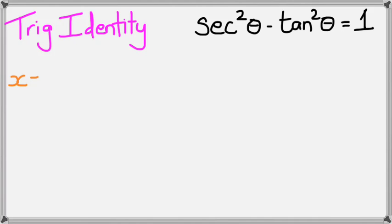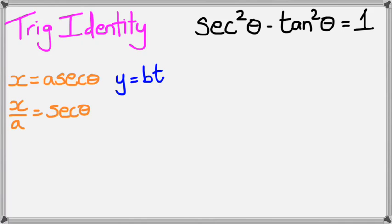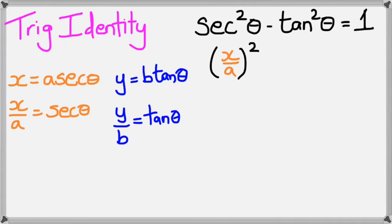We're going to have x equals a sec theta, which means x over a equals sec theta, and then y equals b tan theta, which means y divided by b will be tan theta. And now, what we're going to do is we're going to substitute these back into the trig identity. So sec squared theta, well that's x over a squared minus tan squared theta, well tan theta is y over b, and that whole squared equals 1.